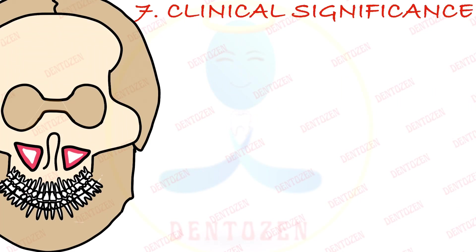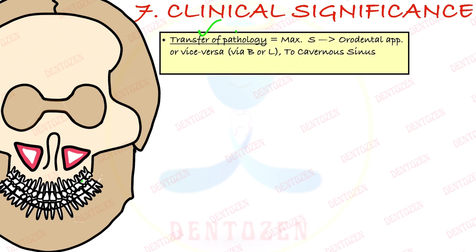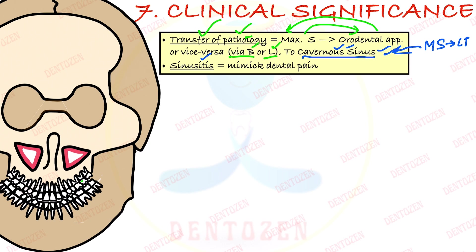Now talking about clinical significance — very important for dentists. First point: since the sinus is very close to the teeth, infections of the mouth or teeth can go to the sinus, and any infection of the sinus can come to the mouth — transfer of pathology from the maxillary sinus to the orodental apparatus or vice versa, via blood vessels or lymphatics. Also, because the sinus communicates with the pterygoid plexus of veins, which communicates with the cavernous sinus, any sinus infection can be life-threatening. Additionally, chronic sinusitis can mimic dental pain in posterior maxillary teeth — the patient may come with tooth pain but have no dental source; then you must consider sinusitis.